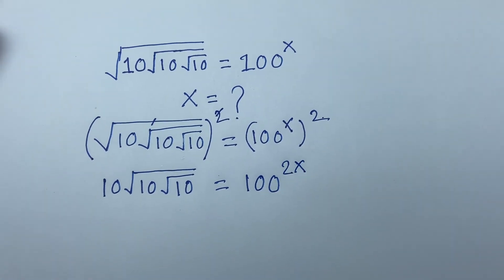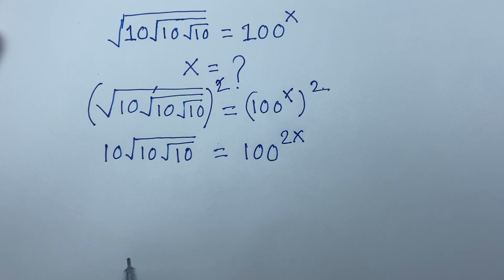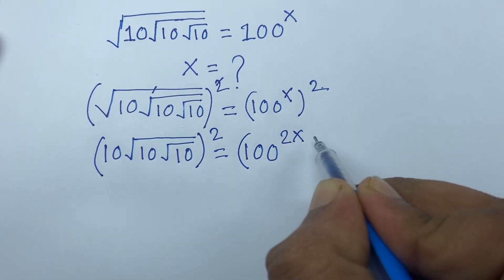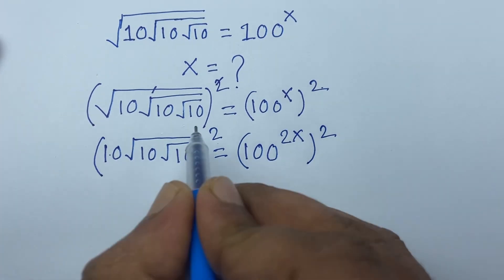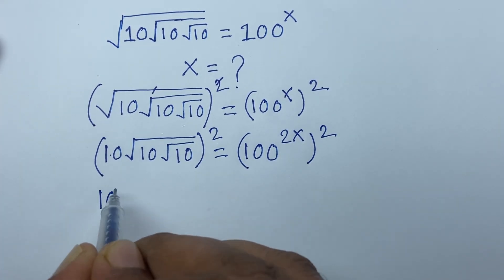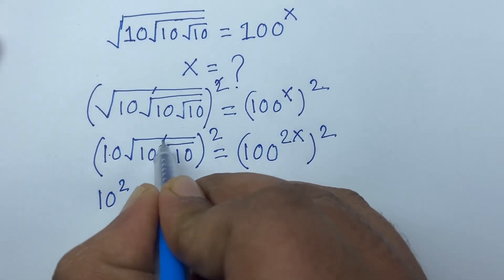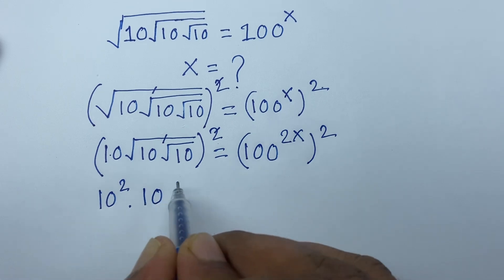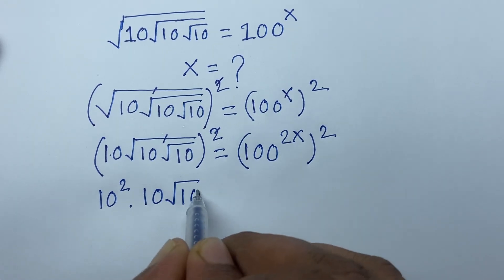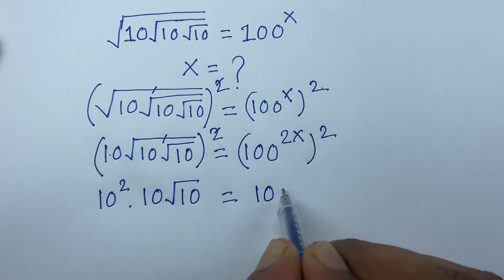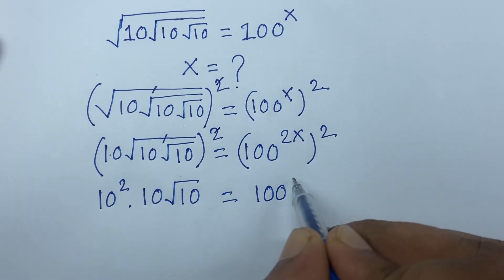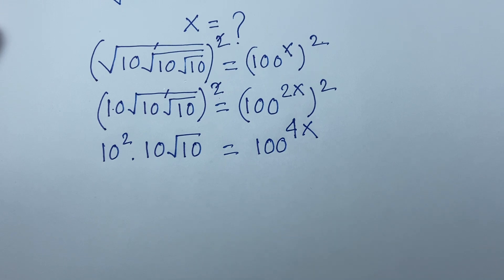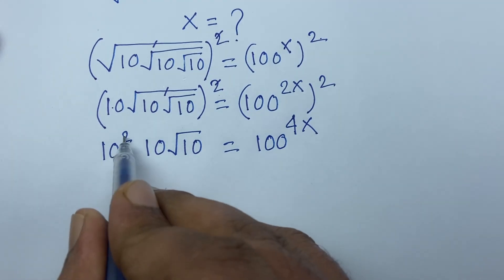Then again I use both sides whole square. The square root cancels again, and we find out here is 10 to the power 2 times 10, and here the square root of 10 is equal to 100 to the power 4x.